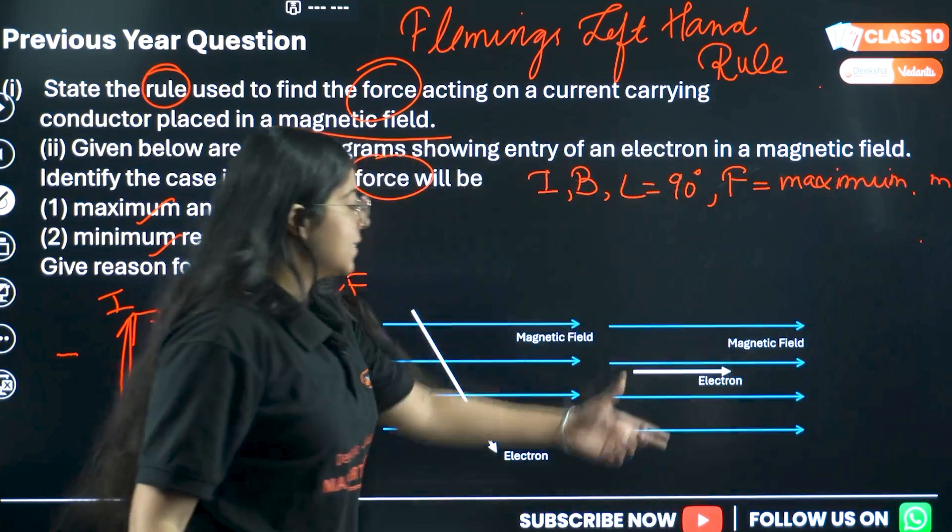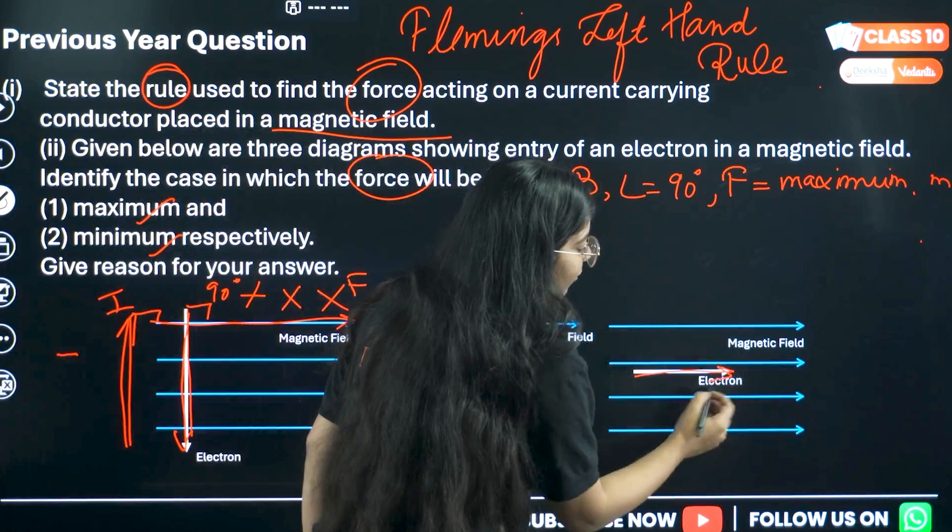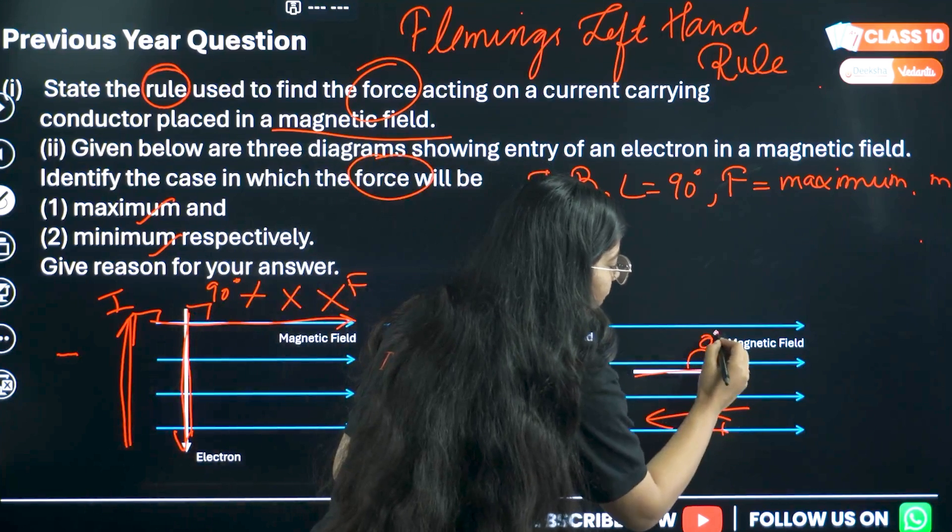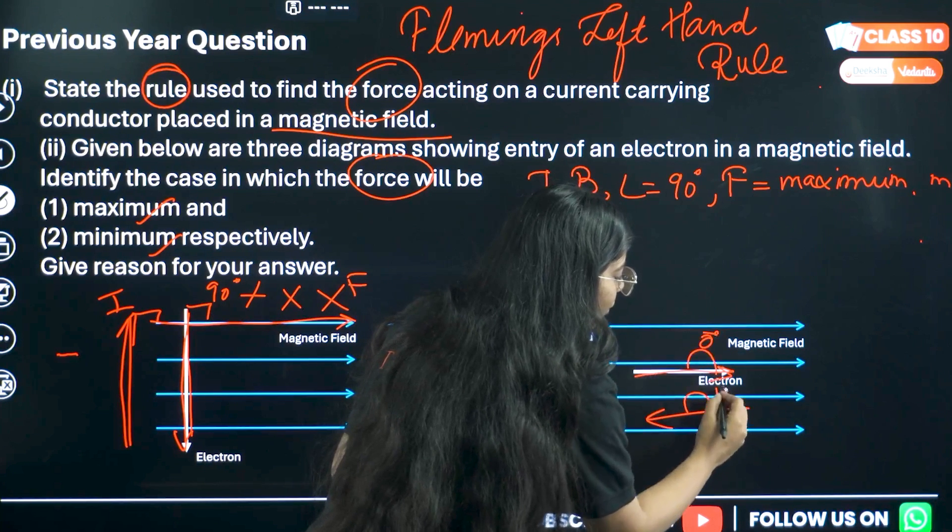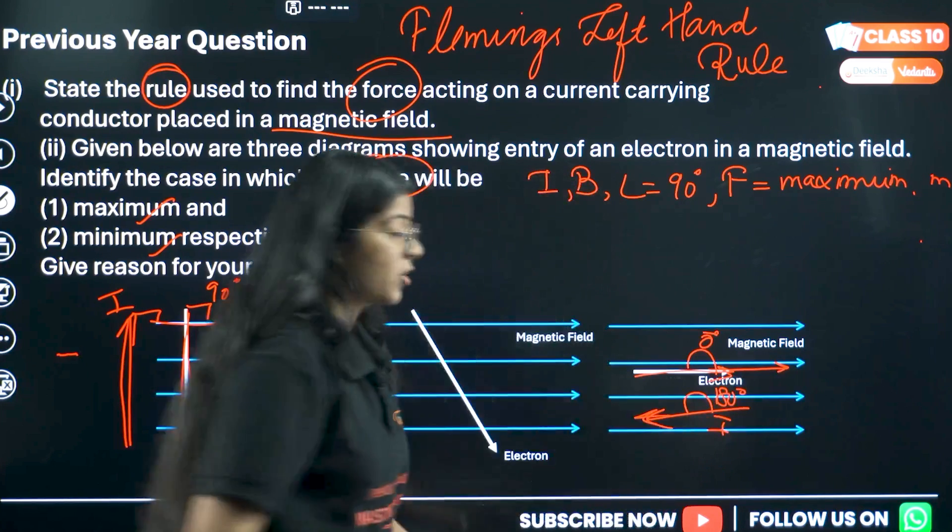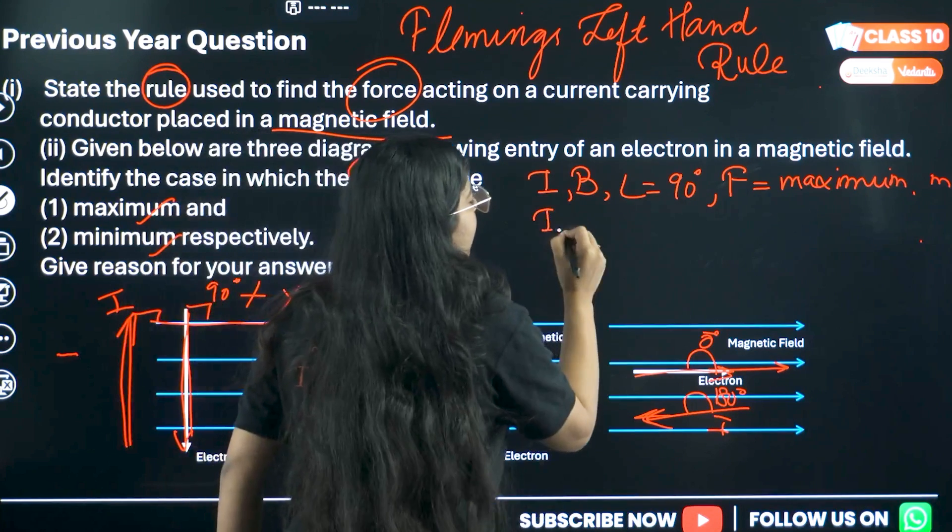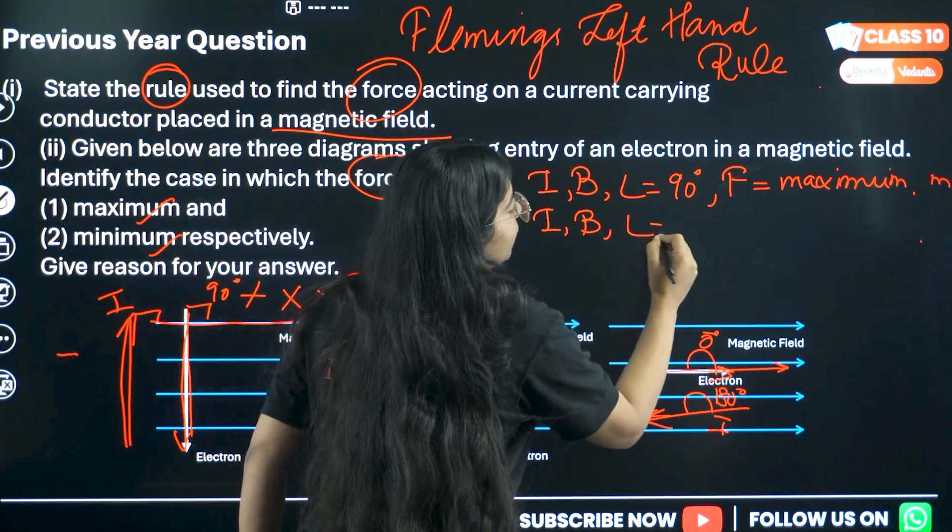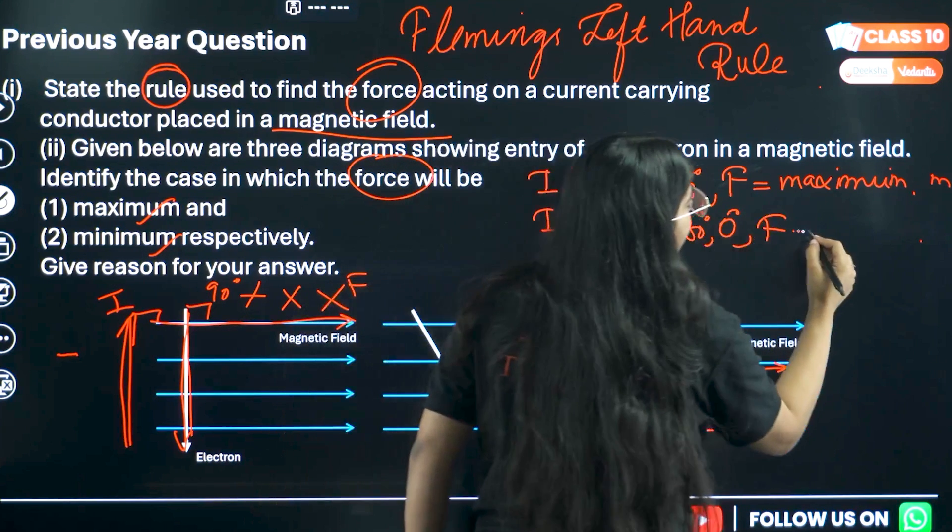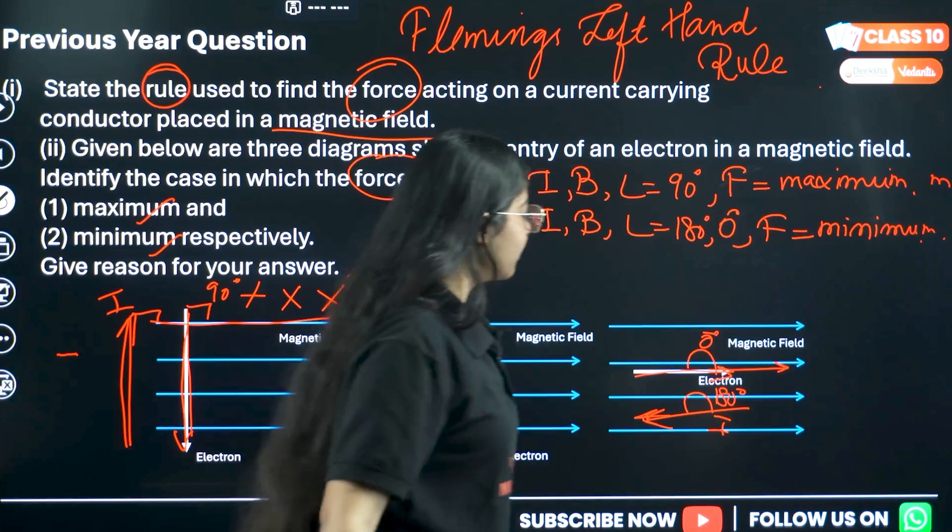Let's see the third diagram. Here the magnetic field and electron if I make current it will be in opposite direction. So it either makes angle 0 degree or current makes angle 180 degree. For both 180 and 0 degree our force will be minimum on the particle in the magnetic field.